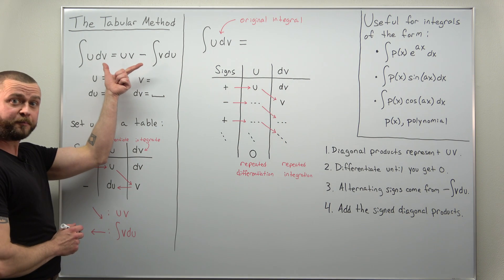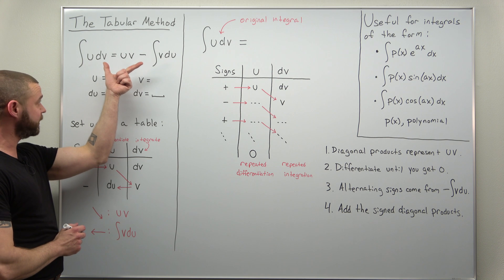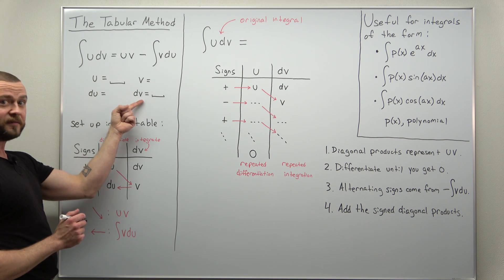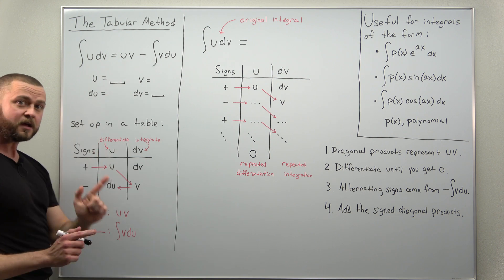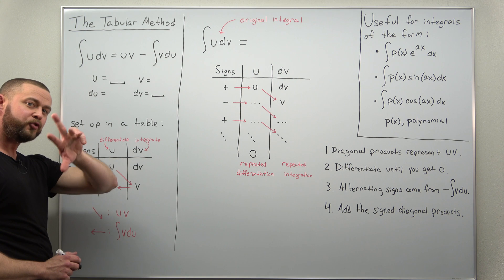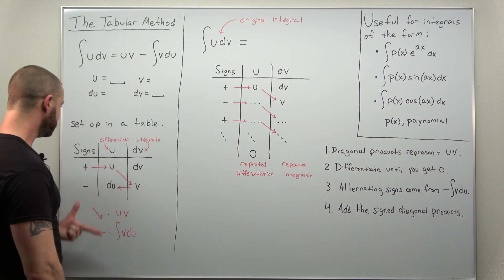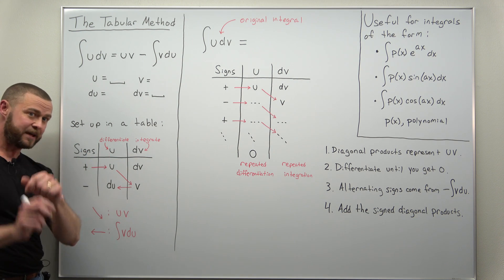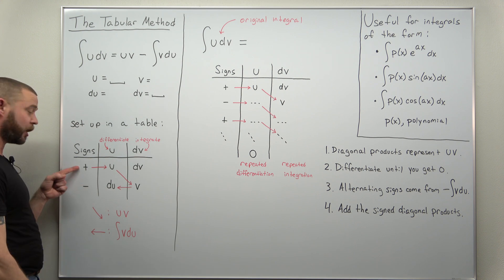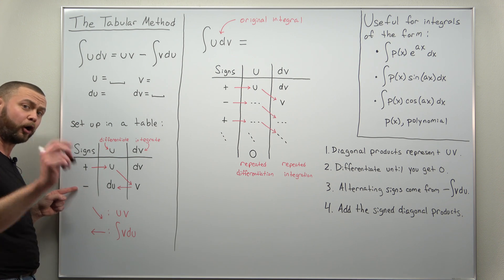We have our basic integration by parts formula, the way we usually arrange our work: u and dv, du and v. But for the tabular method we're going to rearrange it slightly. So we're going to set this up in a table. First column will be the signs, start with a plus and alternate from there.